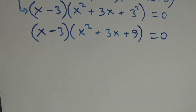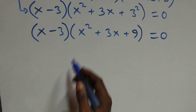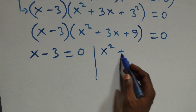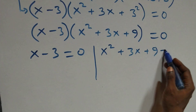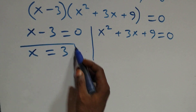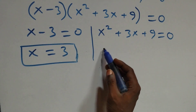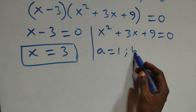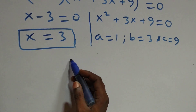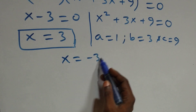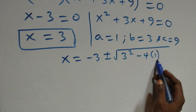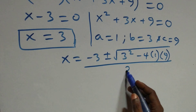This gives two possible cases: x minus 3 equals to 0, or x squared plus 3x plus 9 equals to 0. On the first side, x equals to 3, which is a real solution. For the quadratic, a equals to 1, b equals to 3, and c equals to 9. Applying the quadratic formula gives x equals to minus 3 plus or minus square root of 3 squared minus 4 times 1 times 9, over 2 times 1.